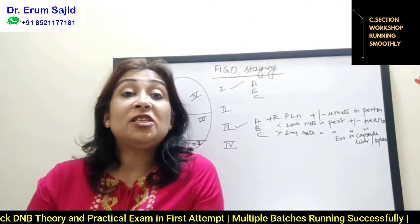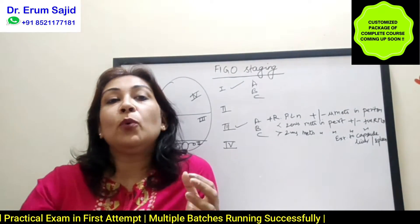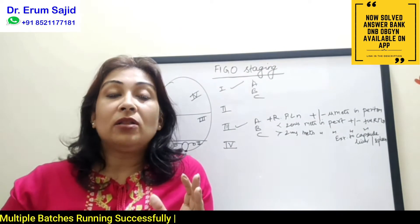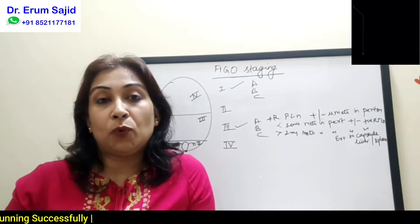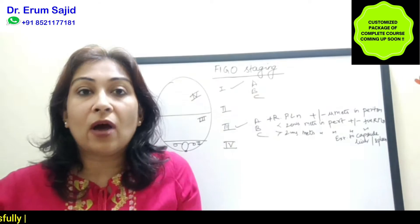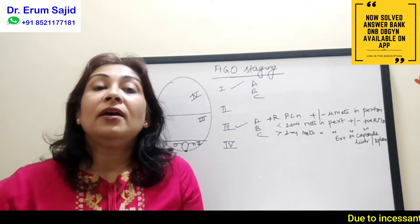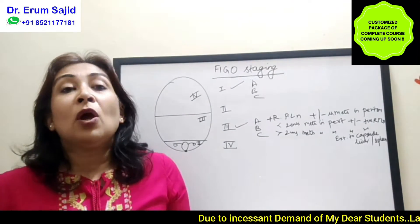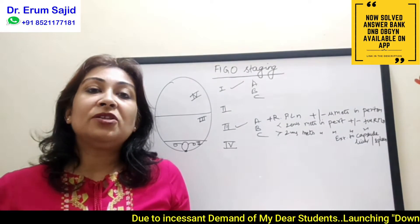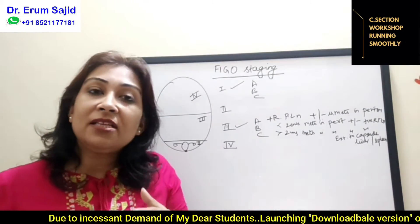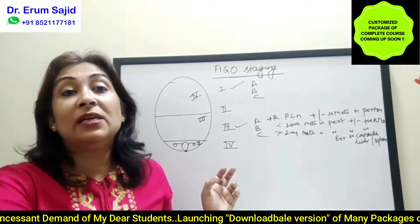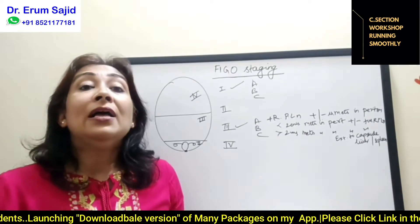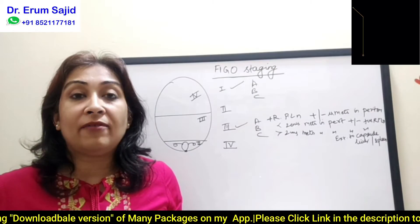Ovarian carcinoma spreads through coelomic spread, or peritoneal fluid. Imagine putting fluid inside the peritoneal cavity — in the erect position, it seeps downward first due to gravity, encompassing all the pelvic organs: the pouch of Douglas, utero-sacral ligaments, upper vagina, bladder, rectum. When the patient moves — sitting, lying down, getting up — this fluid goes to the abdominal cavity, spreading there including to retroperitoneal lymph nodes, omentum, and the capsule of the liver and spleen.